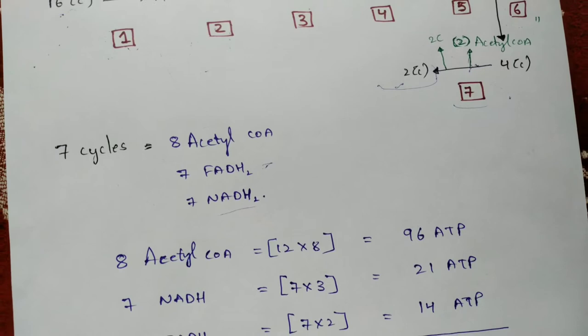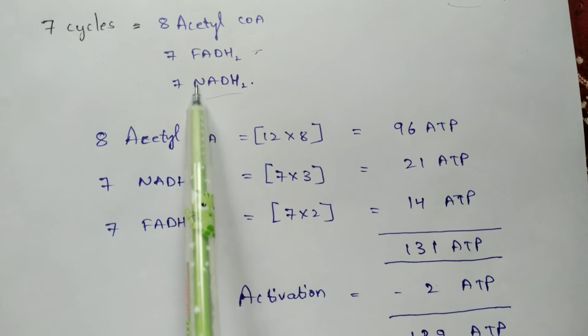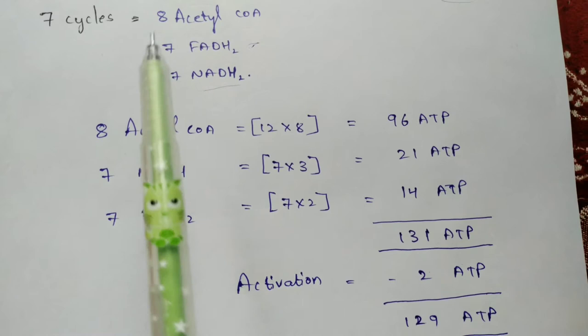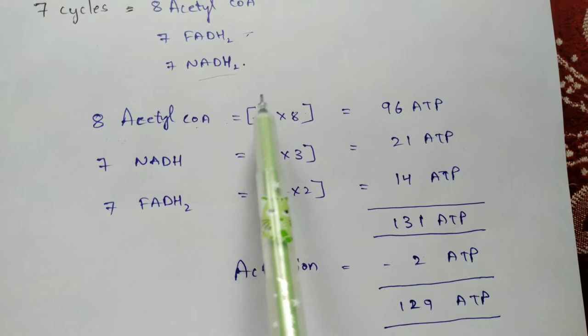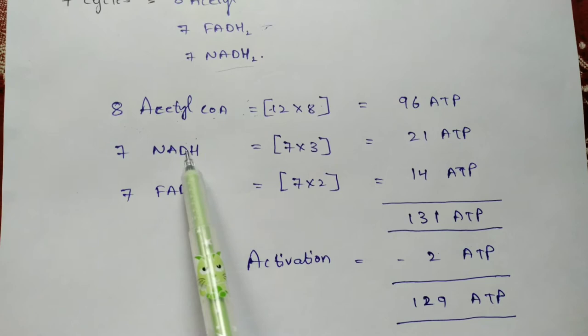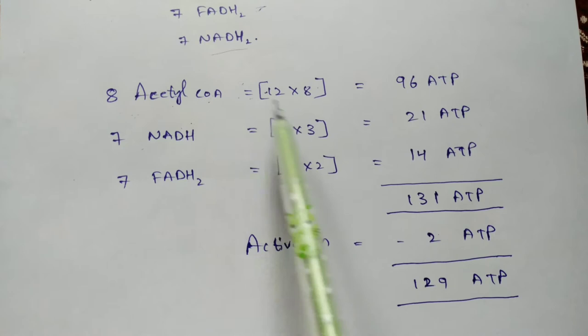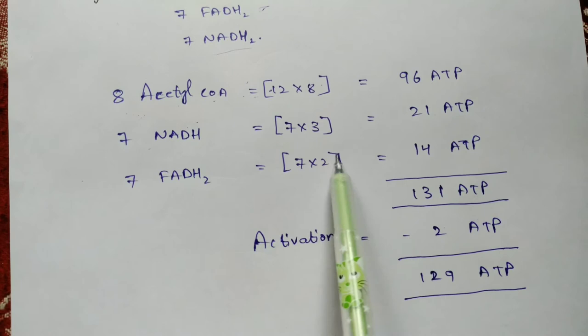Now for the energetic calculations: each acetyl-CoA releases 12 ATP molecules, so eight acetyl-CoA produces 96 ATP. Each NADH yields 3 ATP, so seven NADH gives 21 ATP. Each FADH₂ yields 2 ATP, so seven FADH₂ gives 14 ATP. The total so far is 131 ATP molecules.